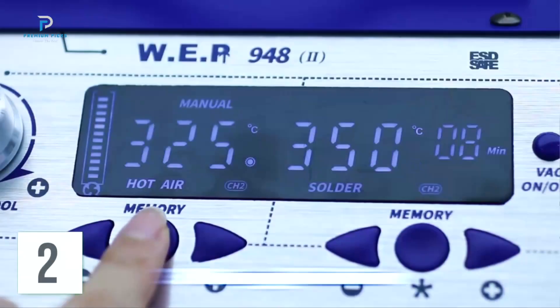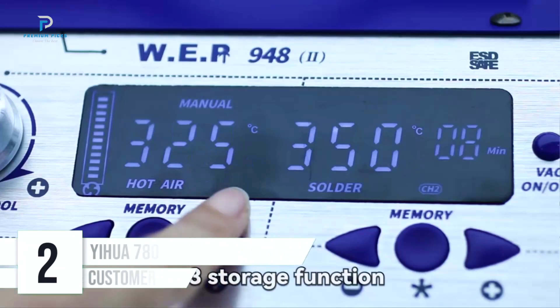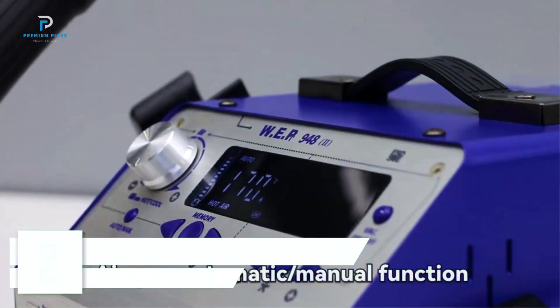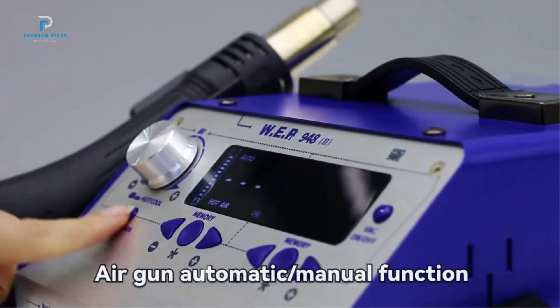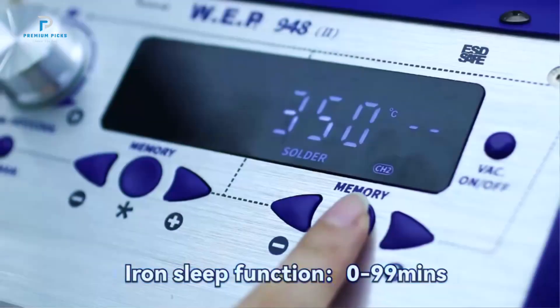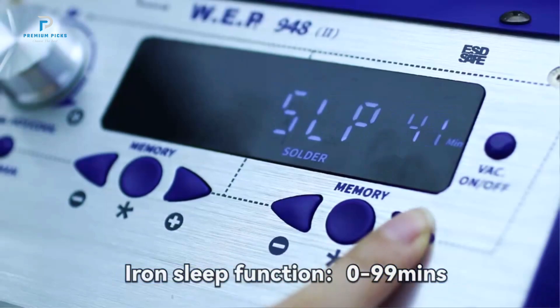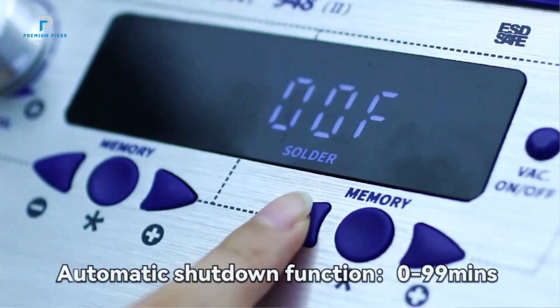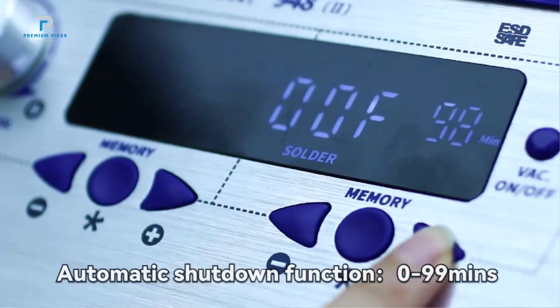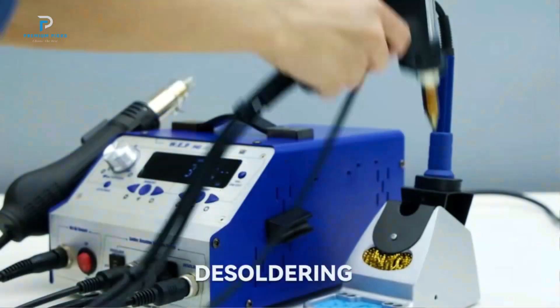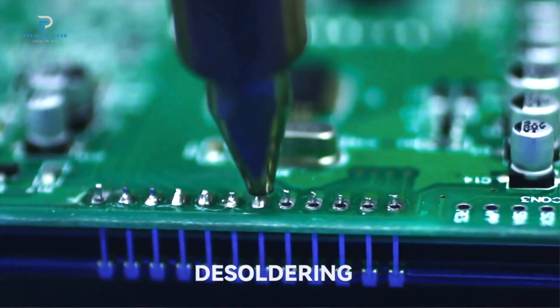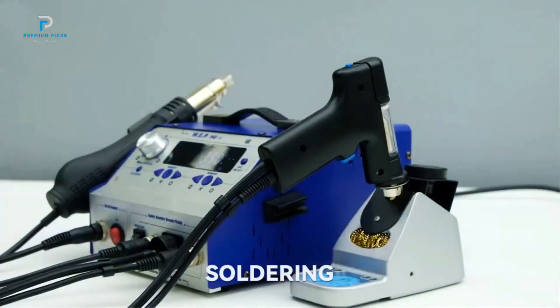Number 2. Yehua 948-2 4-in-1 Soldering Station. The Yehua 948-2 4-in-1 Soldering Station is designed to deliver high efficiency and precision for both beginners and professionals alike. Combining a hot air gun, electric soldering iron, desoldering gun, and suction pen into a single unit, this 780W powerhouse makes everything from fine SMD work to heavy-duty repairs easy and accessible. Here's why the Yehua 948-2 stands out as a comprehensive tool for any serious soldering and desoldering setup.